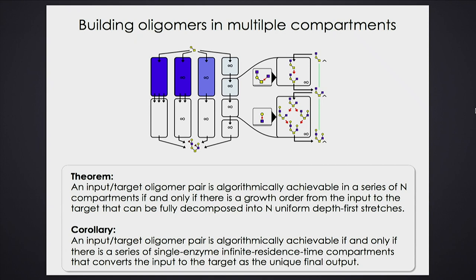In fact, there's a much easier way to test this if you don't care how many compartments you use: an input–target pair is algorithmically achievable in some number of compartments if and only if there is a series of single-enzyme compartments that in the infinite time limit can convert the input to the target. This is trivial to check — is there a series of single-enzyme infinite-time compartments between an input and a target that can make the structure I want? How many compartments depends on what n is.